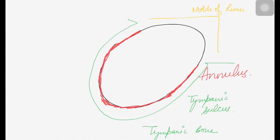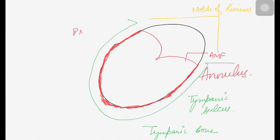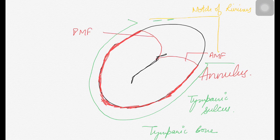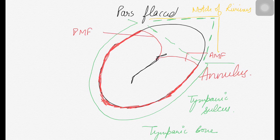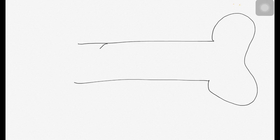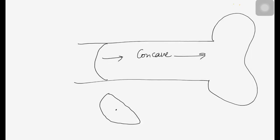The annulus from its anterior and posterior upper margins forms the anterior and posterior mallear folds, attaching to the lateral process of the malleus. This divides the tympanic membrane into the upper triangular pars flaccida (not bound by the annulus) and the lower pars tensa (bound by the annulus, responsible for sound and vibration). The TM is concave toward the external ear, but individual segments from periphery to center are convex.